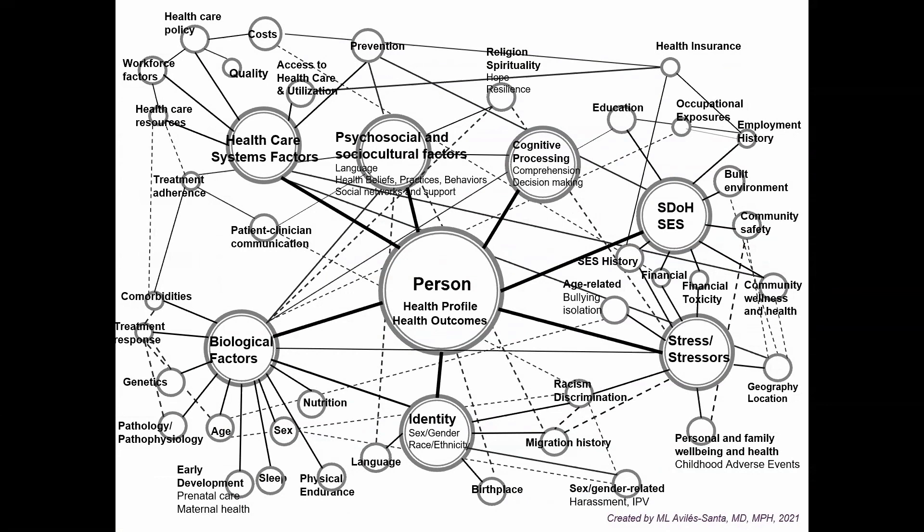Inspired by those two models, I have created this multidimensional diagram with factors and levels in clusters or constellations and how they could relate or interact with each other. These interactions can change over time. These clusters could also represent opportunities for interventions to reduce health disparities. I will refer to this diagram throughout this lecture.